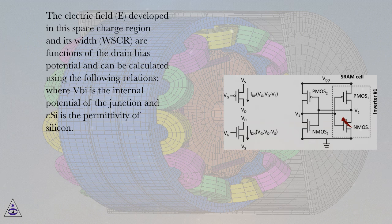are functions of the drain bias potential and can be calculated using the following relations. Where V is the internal potential of the junction and epsilon C is the permittivity of silicon.